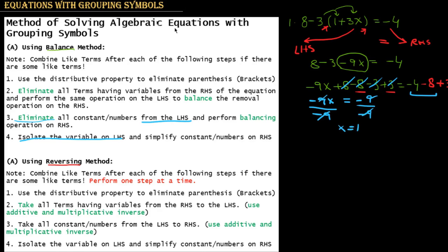That was the balance method. In the reversing method the steps are essentially the same, but it is preferable to perform only one step at a time. In the reversing method we don't do the balancing; instead we take terms to the other side of the equation by replacing them with their additive inverse. We use the distributive property to eliminate the parentheses, which is the same first step.